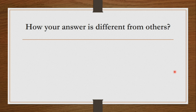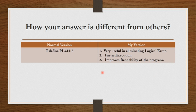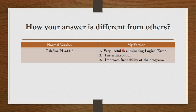When the interviewer asks you to explain symbolic constants, always do a little homework for each and every concept. Use two columns: in the first column write the normal version — how anybody would explain this concept — and in the second column write 'My Version,' which is very important. The normal version is: sir, anything of the form hash define pi 3.1412, where pi is considered a symbolic constant and wherever pi is used it will be replaced with 3.1412. Everybody tells this much.